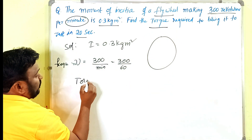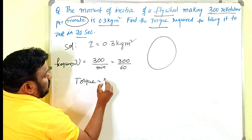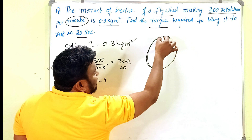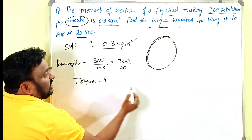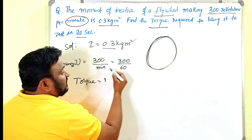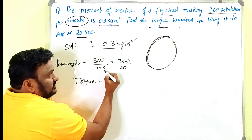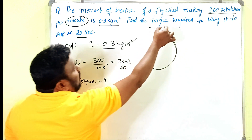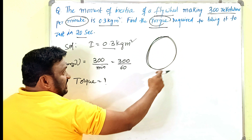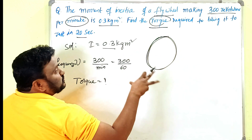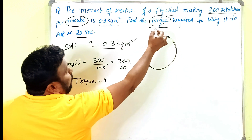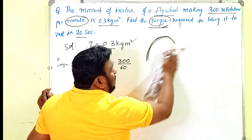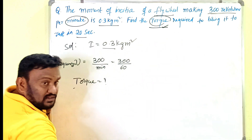According to the problem, there is a flywheel with a given moment of inertia, rotating at 300 revolutions per minute. We want to stop it — that is, bring it to rest — and we need to find how much torque must be applied to do so within 20 seconds. So we have to find the torque.